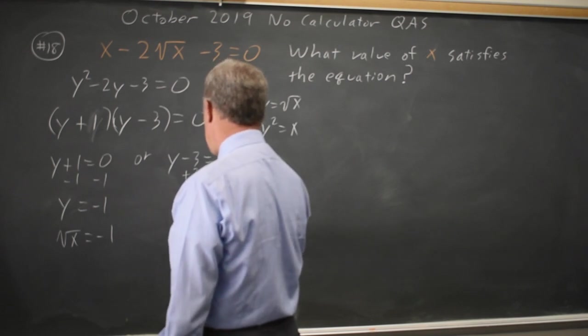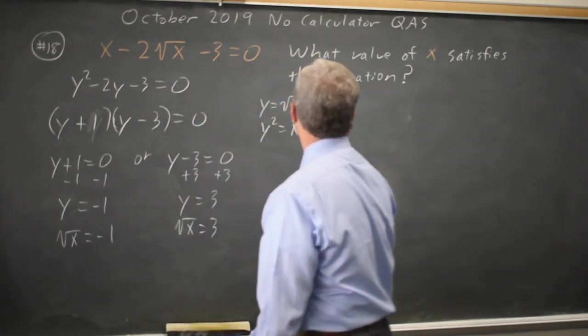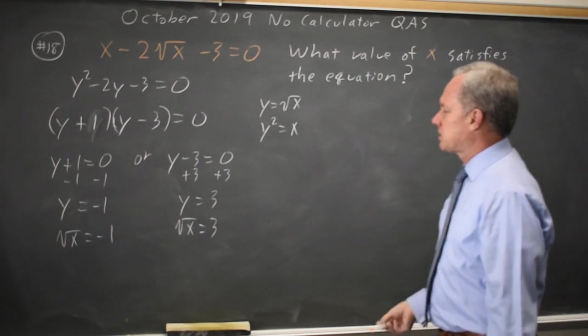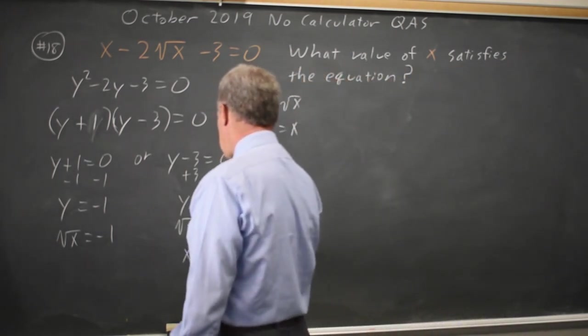which means root x equals 3, but they're not asking for root x, they're asking for the value of x. Squaring both sides, x equals 9.